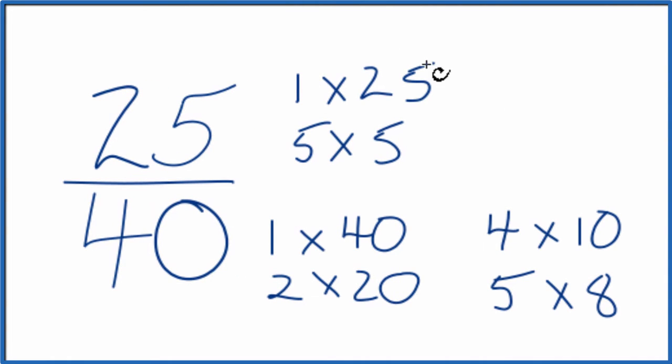So these are the factors for 25 and for 40. We're looking for the greatest common factor. And it looks like the greatest common factor is going to be 5.